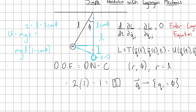Next we want to find the kinetic energy T. Since the pendulum swings at a fixed radius, the mass has a tangential velocity vt. The kinetic energy is T = ½m·vt². The tangential velocity is vt = l·φ̇, so substituting that in gives T = ½ml²φ̇².